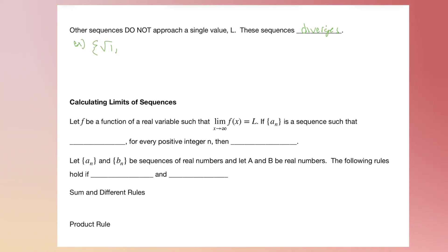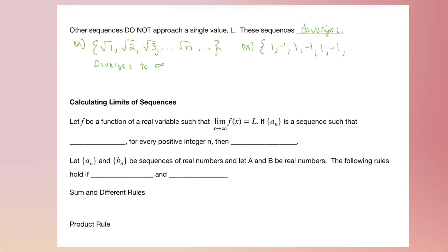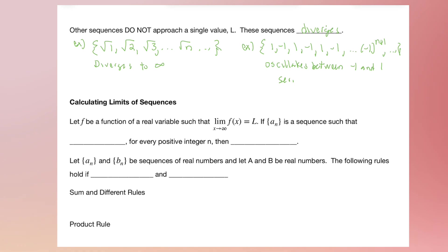An example of a divergent sequence is the square root of 1, square root of 2, square root of 3, all the way up to the square root of n — this slowly gets larger and larger, so it diverges to infinity. Another example is the sequence 1, negative 1, 1, negative 1, with nth term (negative 1) to the (n plus 1) power. This is an oscillating sequence. If a sequence oscillates between two fixed values it does not converge — it diverges. Any oscillating sequence, or any sequence going to infinity or negative infinity, is divergent.